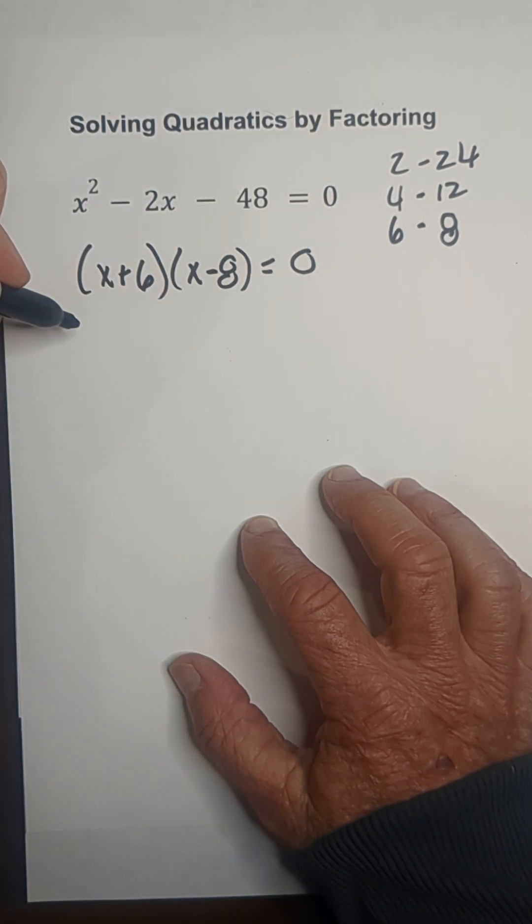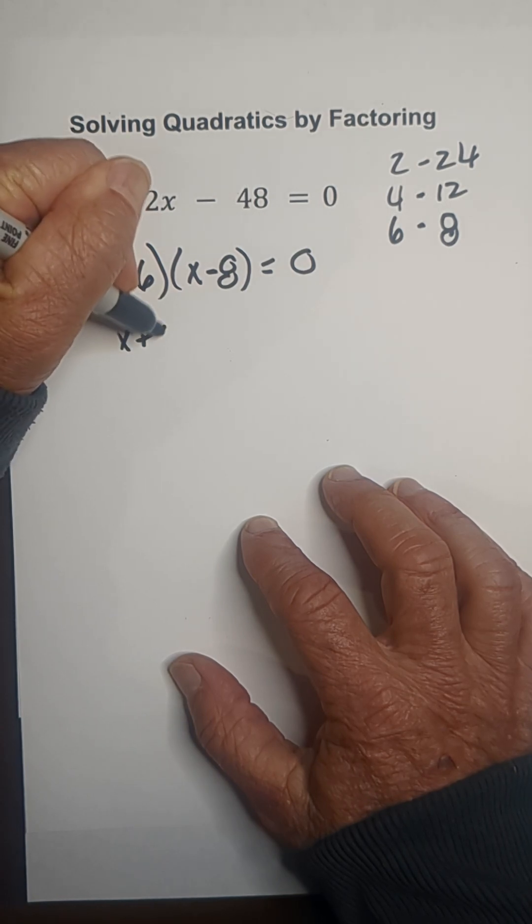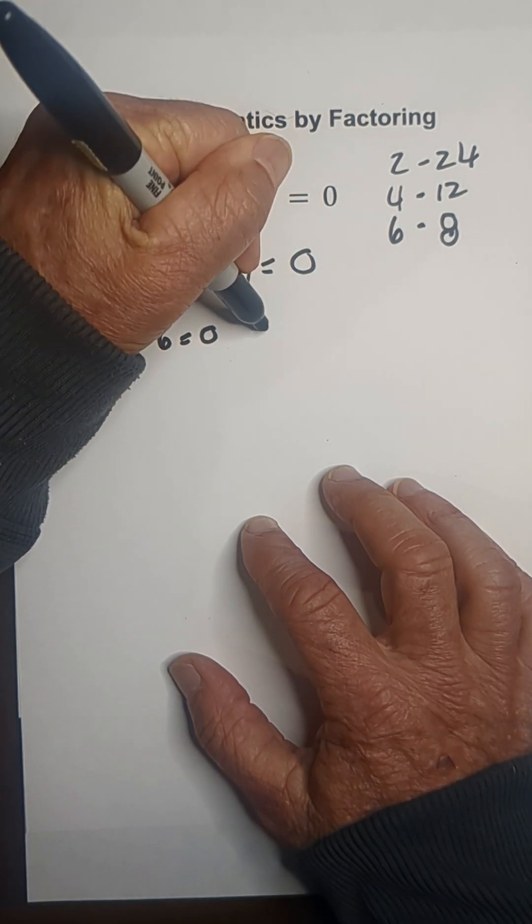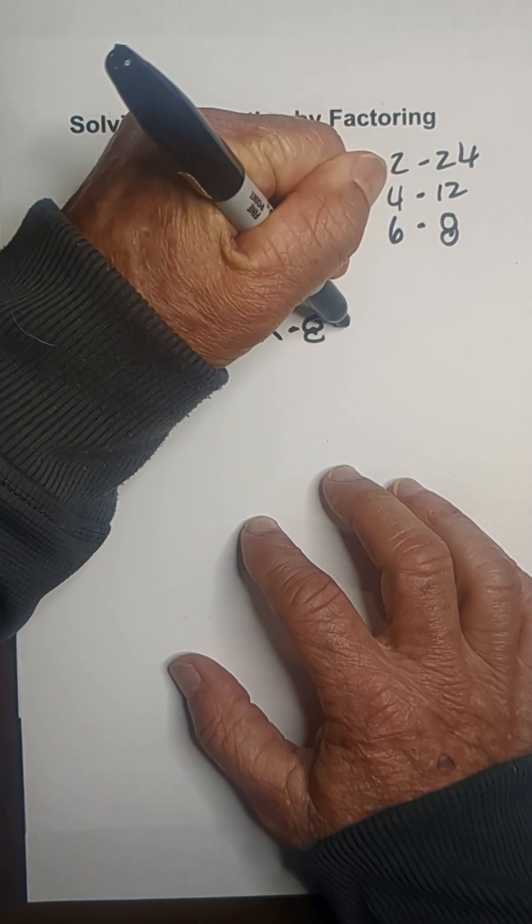I'm now going to write each factor set to 0. So we have x plus 6 equals 0, x minus 8 equals 0.